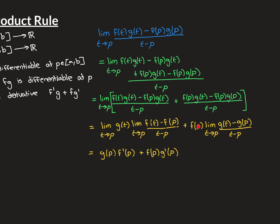Next, the limit as t approaches p of f(t) minus f(p) over t minus p is going to exist because f is differentiable at p, so it exists and has value f prime at p. Then f(p) is just a constant. And the limit as t approaches p of g(t) minus g(p) over t minus p is going to exist because g is differentiable at p, so it has value g prime at p. So all of these limits exist.